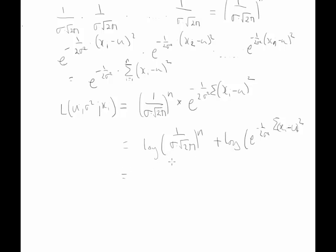From the laws of logarithm, the n comes down, the power comes down, so we have n log 1 over sigma square root 2 pi plus, the logs here are, we have a log and an exponential, so this is just simply minus 1 over 2 sigma squared times the sum of xi minus mu squared.